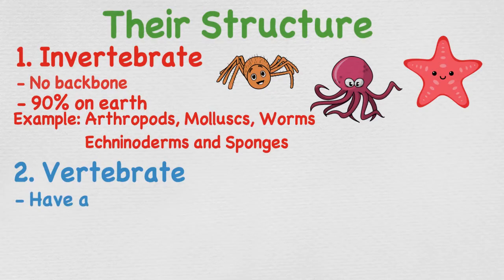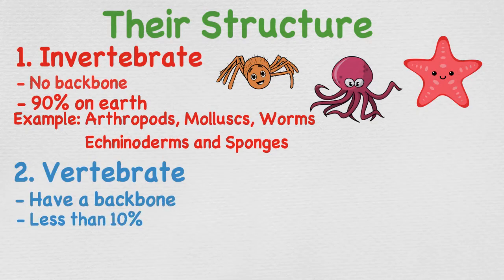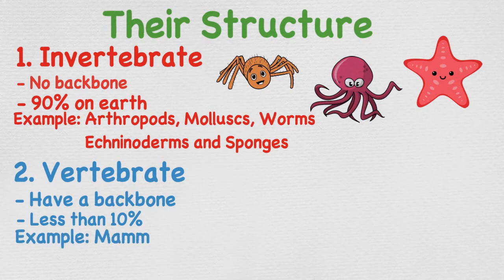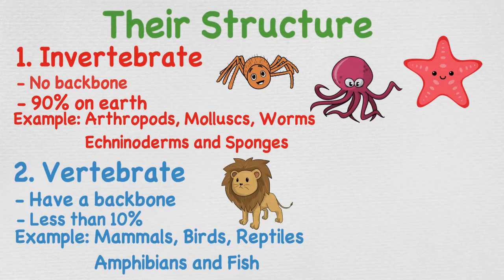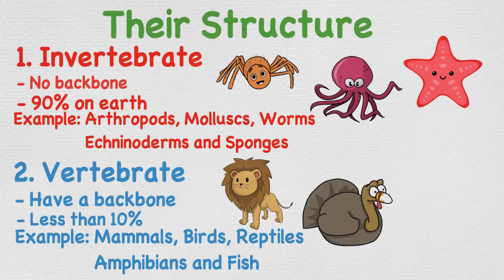Vertebrates do have a backbone and make up far fewer animals on Earth — less than about 10%. We're going to look a bit deeper into the vertebrates and what differentiates them from one another. The vertebrates consist of mammals, birds, reptiles, amphibians, and fish.